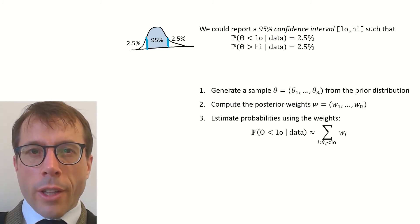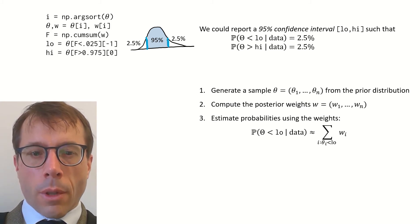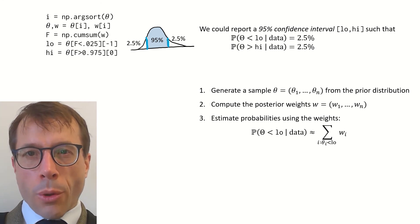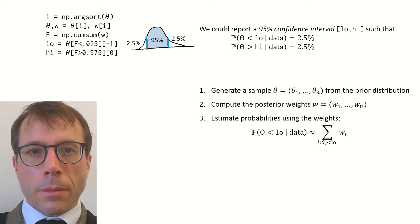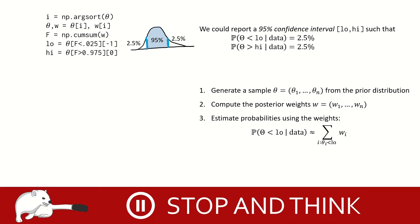And this actually lends itself to a pretty slick trick for computing the 95% confidence interval. We'll just reorder the theta samples so that they're in order, we put the weights in the same order, we get the cumulative sum of the weights, I'll call it capital F, and then we find the point where the cumulative sum hits 2.5%, and similarly for the upper end of the threshold. This is a bit of a brain twister. Pause the video and think to yourself why it works. Make up some small vector of theta values and weight values and run this code and make sure you can see why it works.